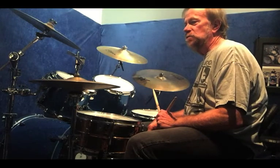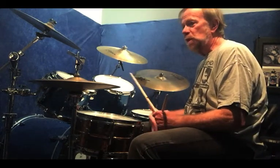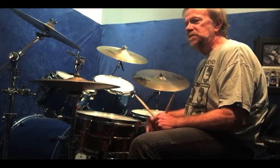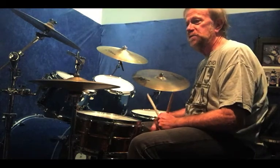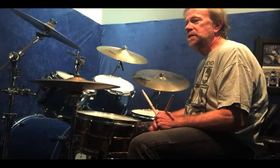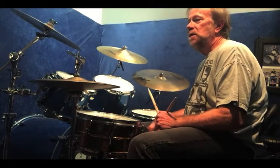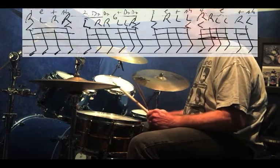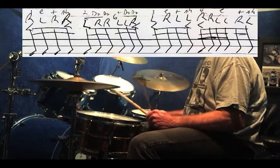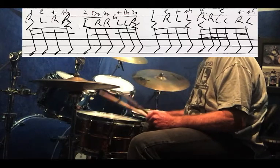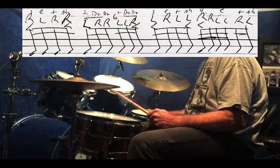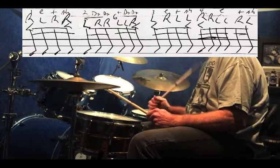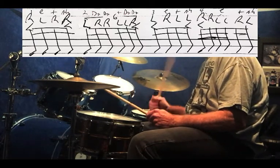With this one it's not only sixteenth notes but sixteenth note triplets and some thirty-second notes. So the count would be: one e and a, two da da and da da, three e and a, four e and a — real slow.